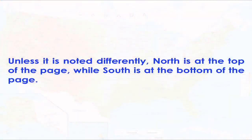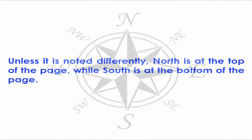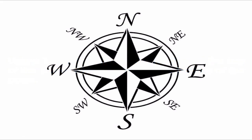Unless noted otherwise, you can always assume that north is at the top of the page on a map and south will be at the bottom. You'll often find a compass rose, which is helpful for understanding directions including northwest, northeast, south, west, and southeast.